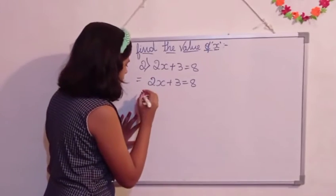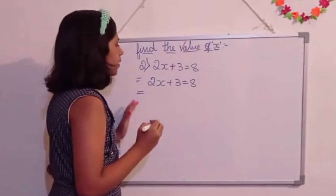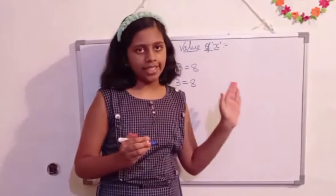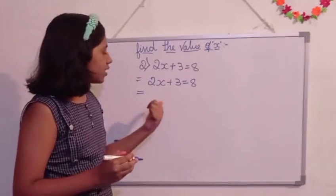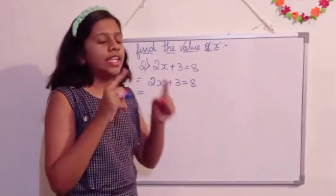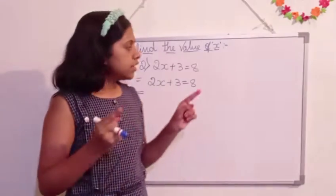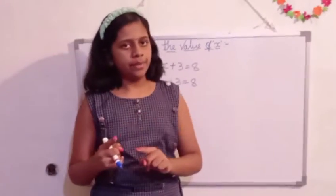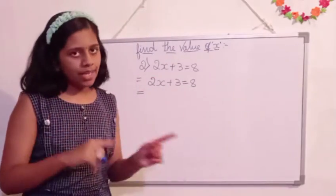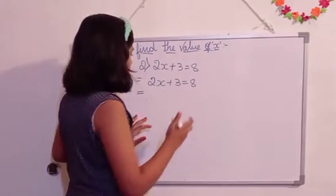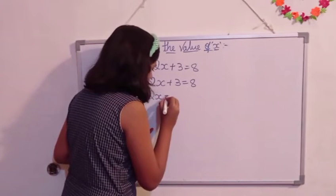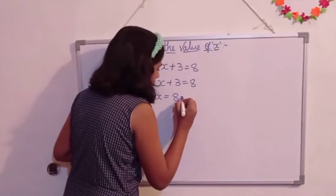Next, we are going to shift the 3 to the right side of the 8 here. So if it shifts, it becomes minus 3. Here plus 3 is there, it becomes minus 3. So 8 minus 3 it becomes. It changes its sign there, as I said in the last video. So here let's write 2x equals 8 minus 3.